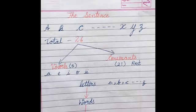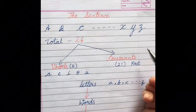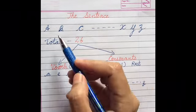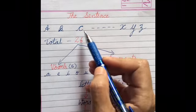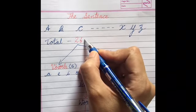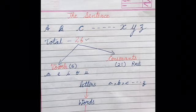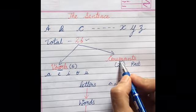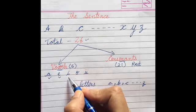The first thing we are going to take up is the sentence — this is going to be our first topic in this video series. As you know, we have the letters, alphabets A to Z, so there are 26 alphabets or letters in the English language. Out of that, 5 are vowels and the rest are consonants. The vowels are A, E, I, O, and U.